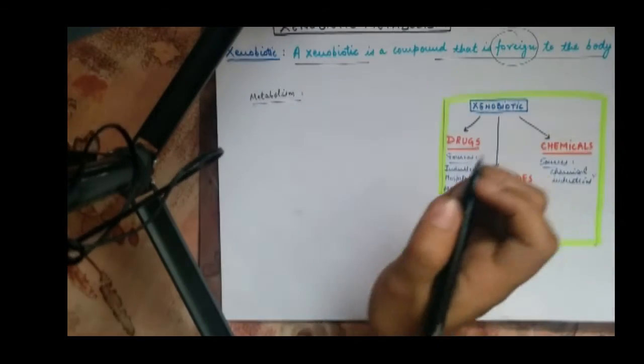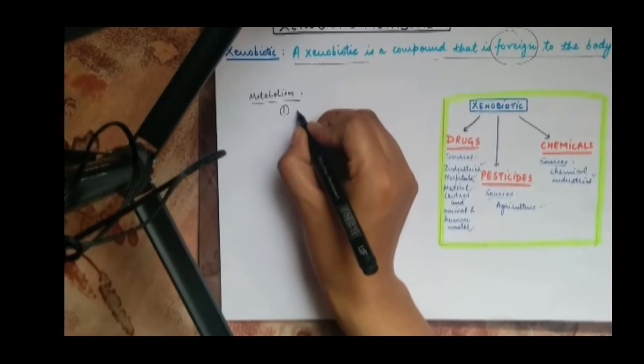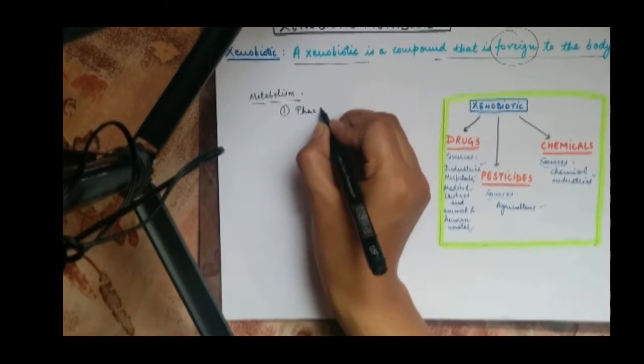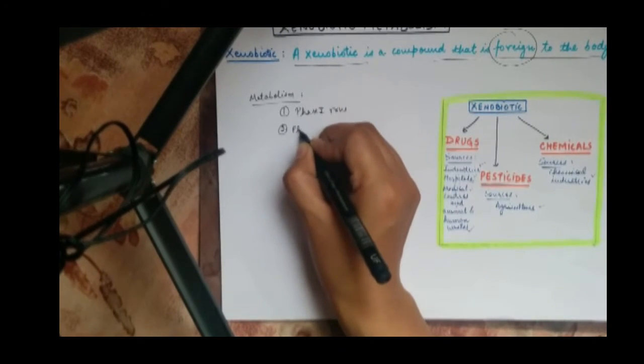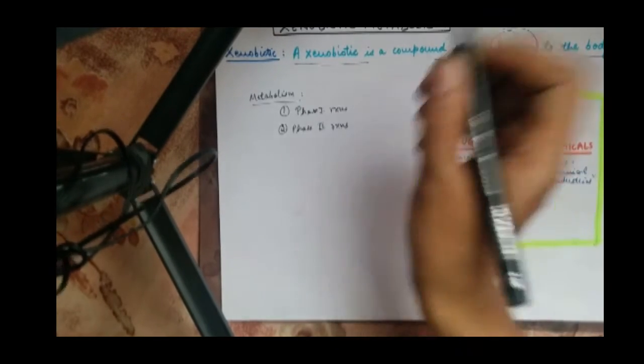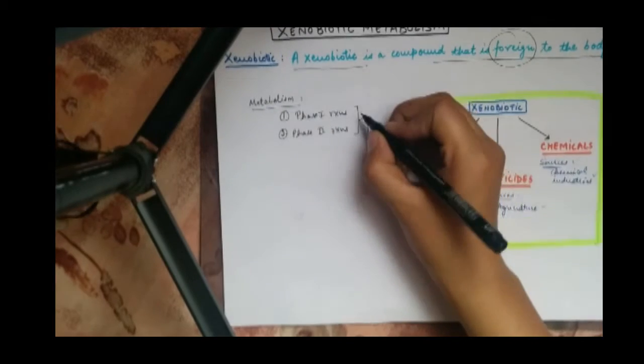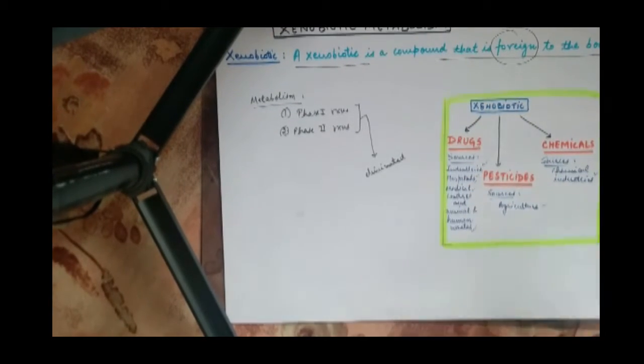Xenobiotic metabolism occurs in two phases. The first one is called phase 1 reactions, and the second is called phase 2 reactions. By undergoing through these two phases, the xenobiotic is ultimately eliminated from the body via urine.